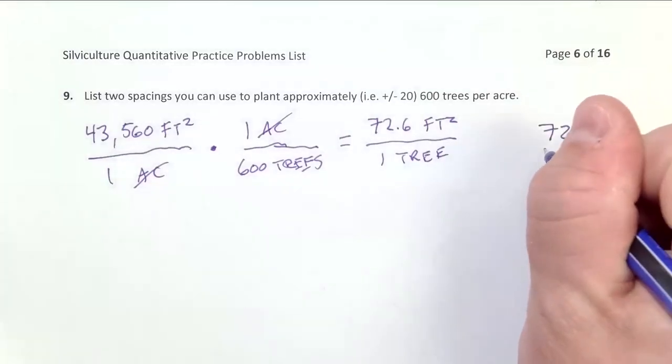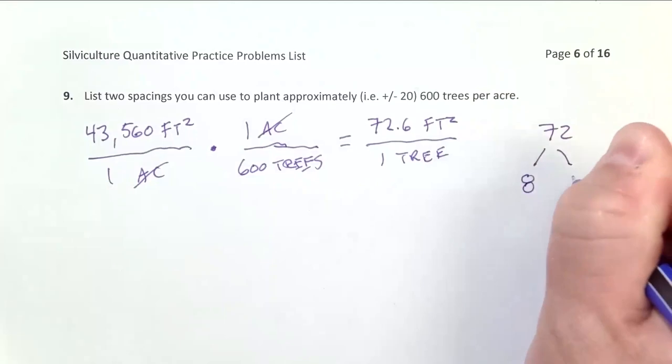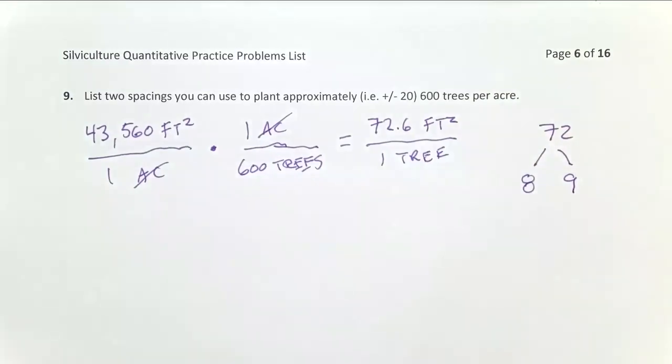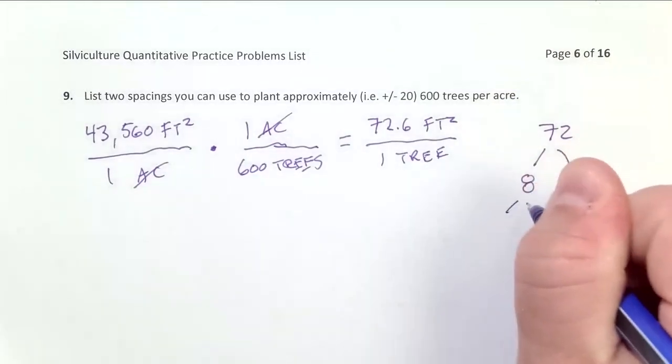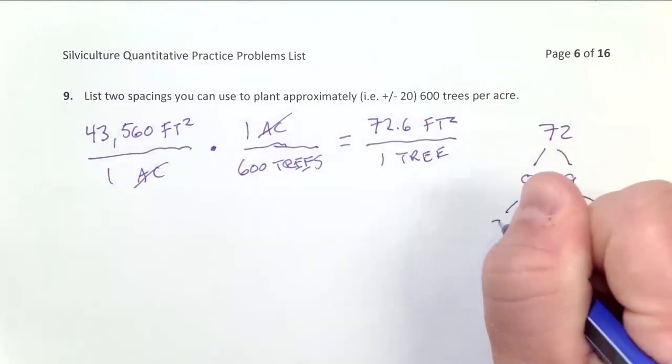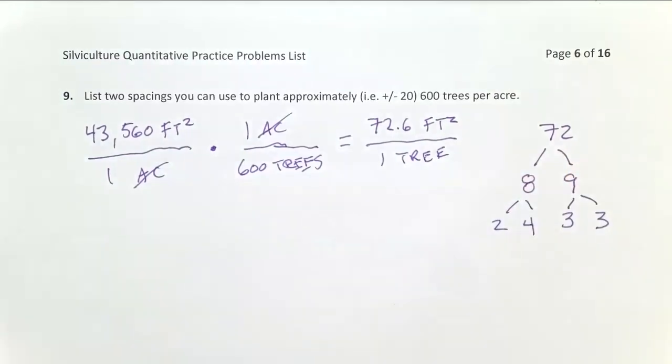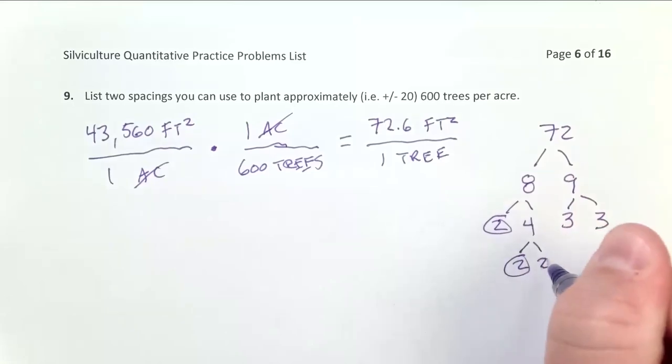So let me first start by splitting this. I know 8 times 9 equals 72. And then as I look at this, for 9, I know 3 times 3 equals 9. 3 and 3 are both prime numbers, so I'm done over there. For 8 over here, I know I can do 2 times 4 will equal 8. And I know for 4, it's a product of 2 times 2. So there's my prime factors. I have 2, 2, 2, 3, 3.